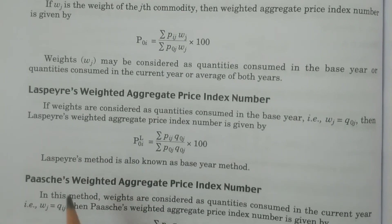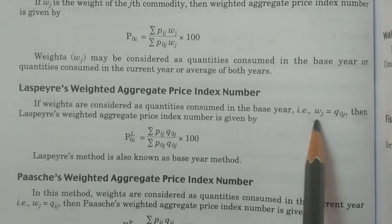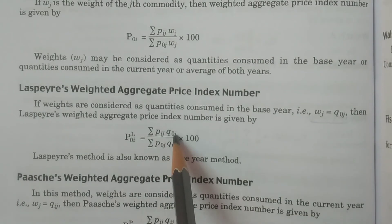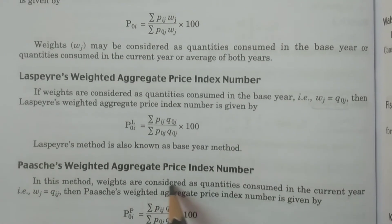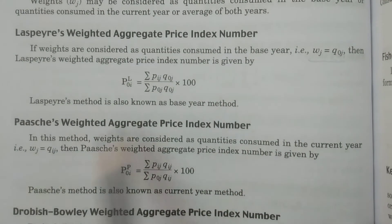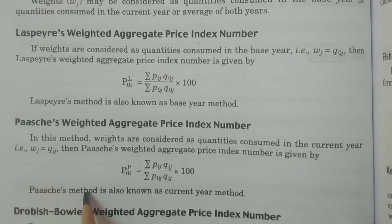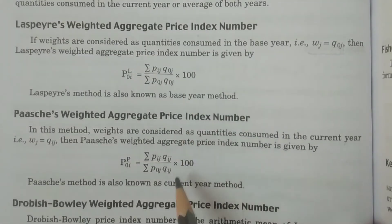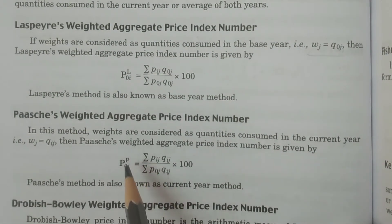Various formulas differ by the choice of weight WJ. Laspeyres' formula uses WJ = Q0J (base year quantities): P0I(L) = summation PIJ·Q0J divided by summation P0J·Q0J into 100. Paasche's formula uses WJ = QIJ (current year quantities): P0I(P) = summation PIJ·QIJ divided by summation P0J·QIJ into 100.